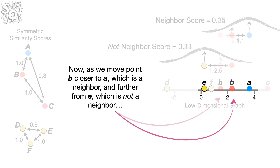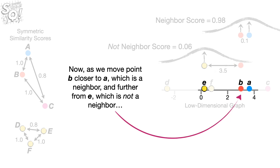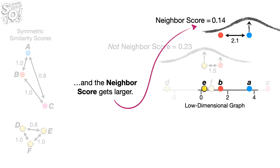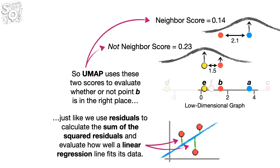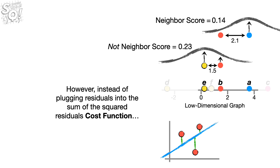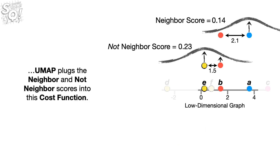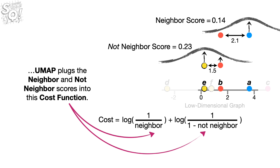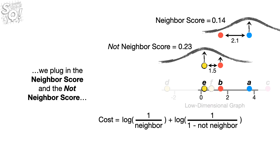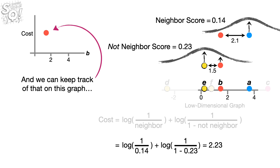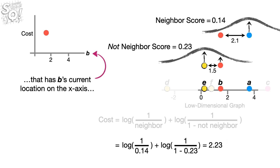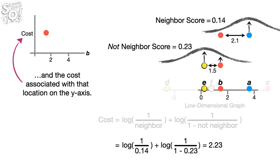So now we have two scores. The first score, 0.14, is for a point in the same neighborhood as B that B needs to move closer to — we'll call that a neighbor score. The second score, 0.23, is for a point in a different neighborhood from B that B needs to move away from — we'll call that a not-neighbor score. As we move point B closer to A, which is a neighbor, and further from E, which is not a neighbor, the not-neighbor score gets smaller and the neighbor score gets larger. So UMAP uses these two scores to evaluate whether or not point B is in the right place, just like we use residuals to evaluate how well a linear regression line fits its data. Instead of plugging residuals into the sum of squared residuals cost function, UMAP plugs the neighbor and not-neighbor scores into its cost function. So when point B is here, we plug in the neighbor score and the not-neighbor score, and the cost is 2.23. And we can keep track of that on a graph that has B's current location on the x-axis and the cost associated with that location on the y-axis.